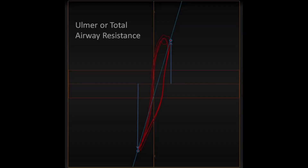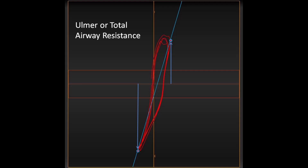One other method for adjusting the airway resistance loop may be seen outside of the United States. This method is called the Ulmer Method, or sometimes called Total Airway Resistance. The Ulmer Method defines the line of best fit between the points of maximal inspiratory and expiratory volume shift or pressure change. By adjusting the line of best fit to the maximal pressure change, you may have improved sensitivity at end expiration; however, you may also have increased variability.